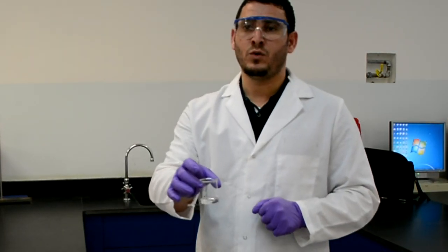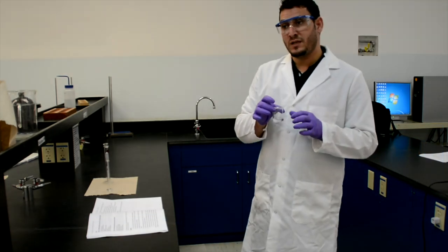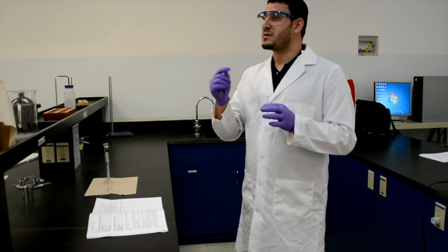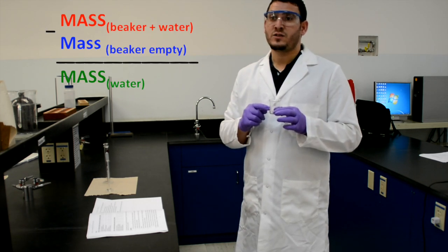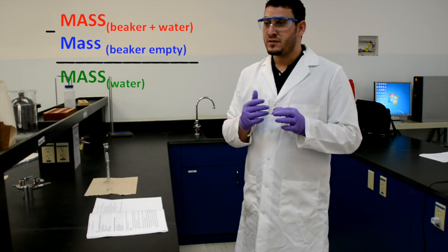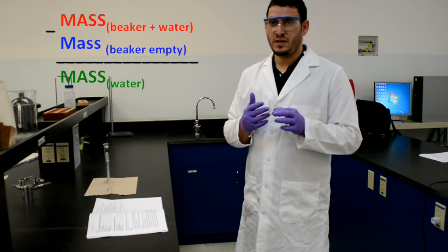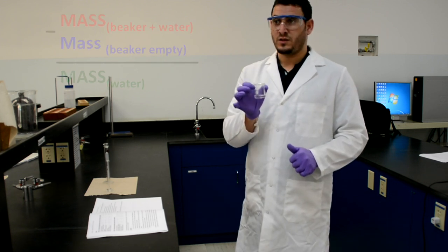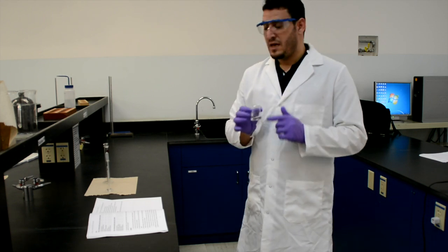To know the mass of the water, I can take the beaker and measure its mass on the scale. But the number the scale gives me will be the mass of water plus the mass of the beaker. So I need to subtract — I need the mass of the empty beaker.